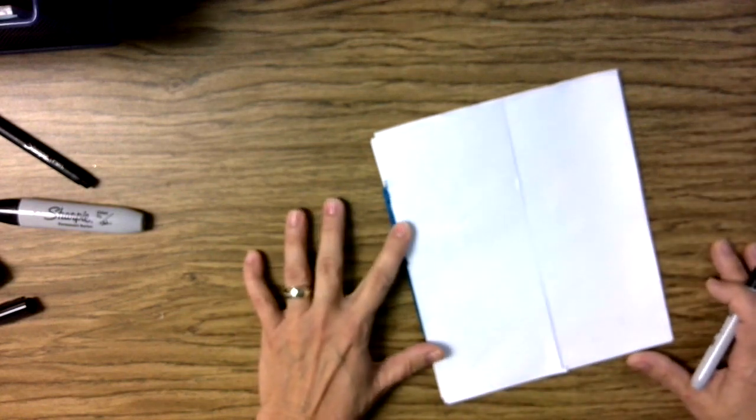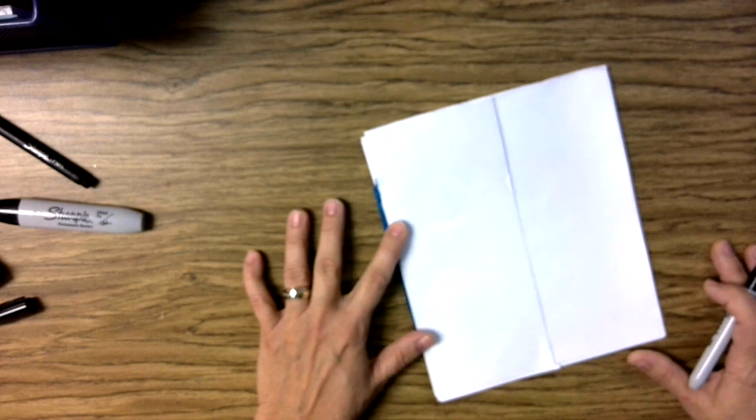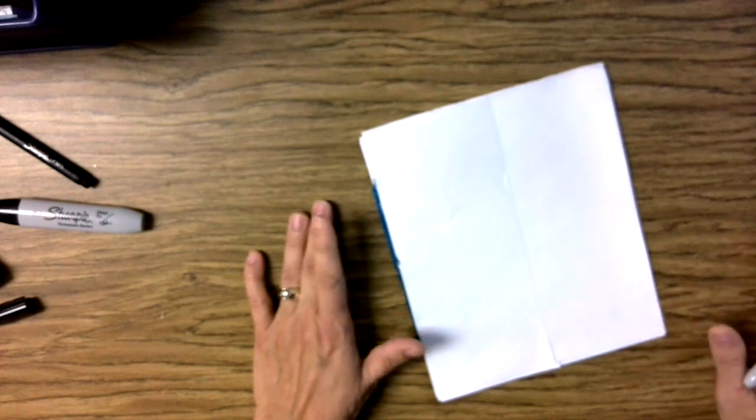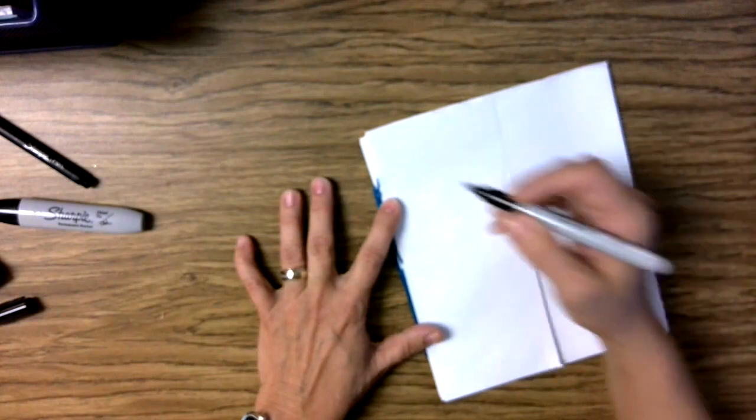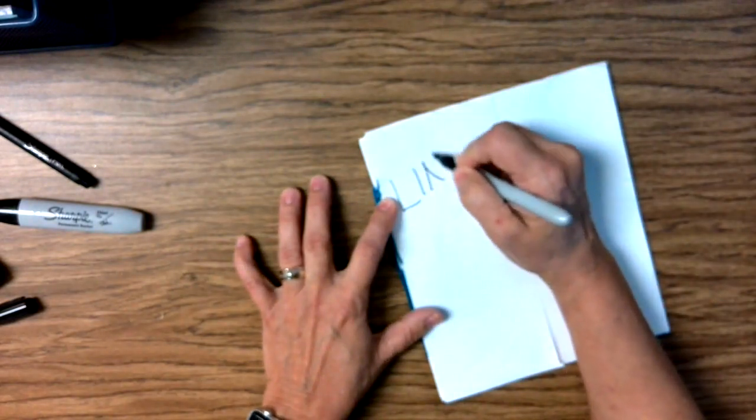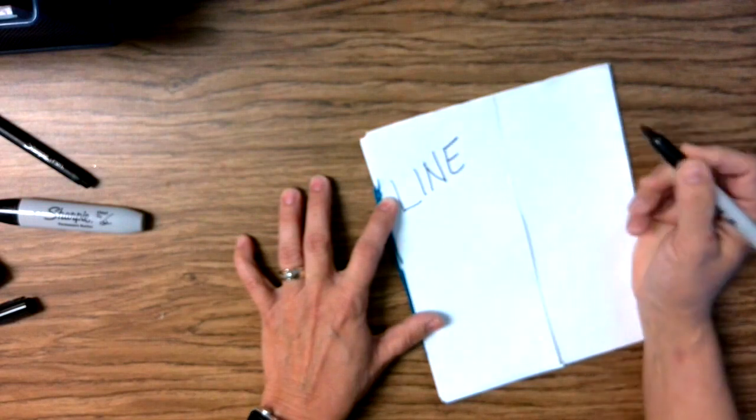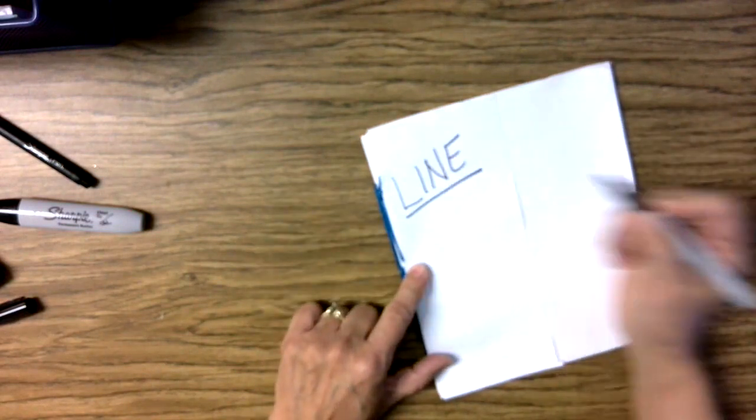This morning we're going to talk about line. What is line? How would you define line? What are some types of line? Let's just start in your sketchbook. Let's just write the word lines. There's a line underneath it.